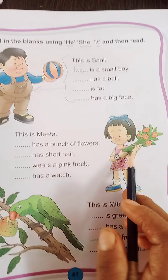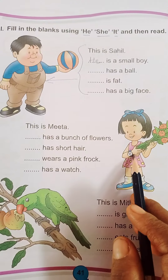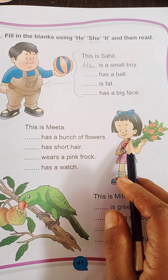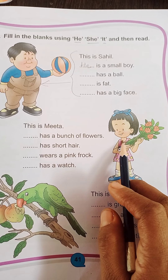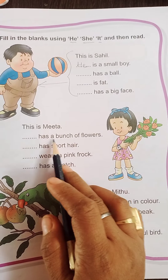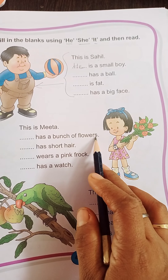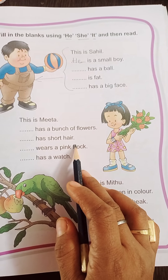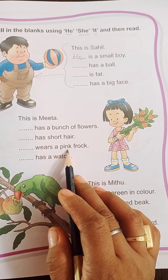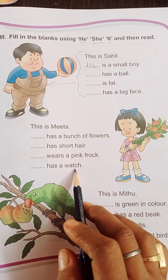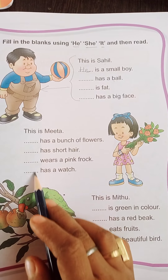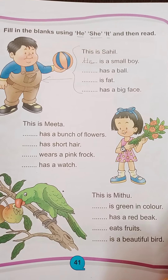Similarly, dekho yahaan per Meeta a gai. Who is she? This is Meeta. She is Meeta. Toh now we will use 'she' here. She has a bunch of flowers. She has short hairs. She wears a pink frock. She has a watch. Toh what will you write here? She.